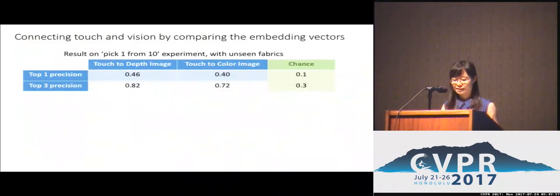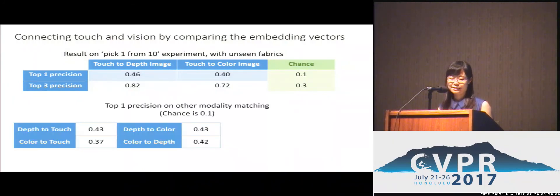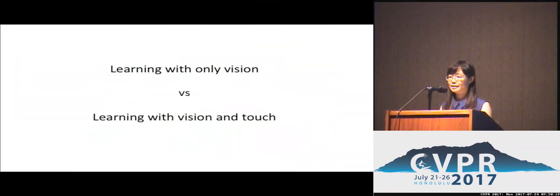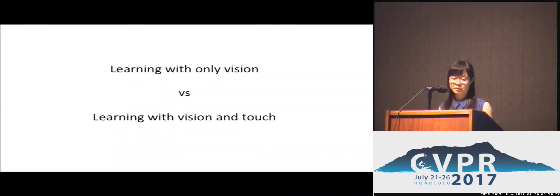The overall results of matching depth or color images to touch images show performance much better than chance. We also tried matching between other modalities and within single modalities. One particularly interesting finding is that learning with both vision and touch helps the neural network gain a better understanding of material properties than learning from vision alone.